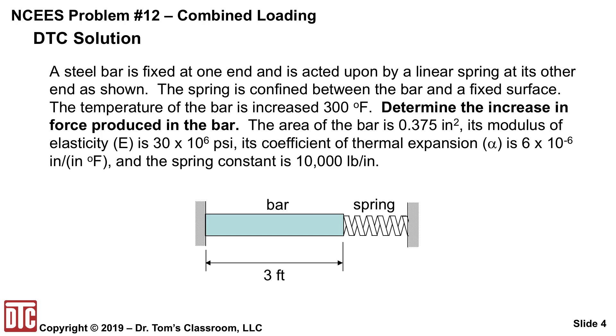The area of the bar is 0.375 inches squared. Its modulus of elasticity E is 30 times 10 to the 6 psi. Coefficient of thermal expansion alpha is 6 times 10 to the minus 6 inches per inch per degree F. And the spring constant is 10,000 pounds per inch. The bar starts off as 3 feet long.